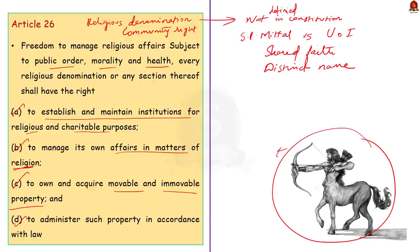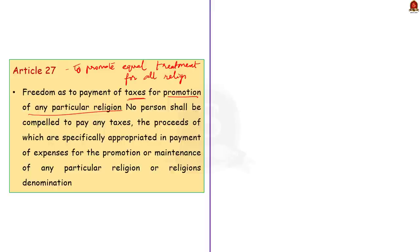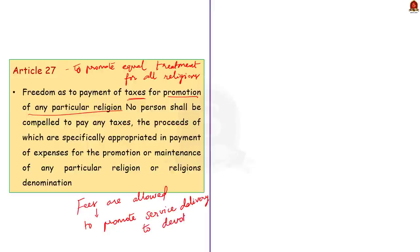Moving on to Article 27, no one can be compelled to pay any taxes for the promotion or preservation of any religious denomination. This provision is inserted to prevent the government from favouring one religion over another. Notice that the wording says 'taxes' — so charges can be imposed. For example, the government imposes entry fees on religious sites, and this is not violative of Article 27, as charges like entry fees are used mainly for the secular management of the religious site and not for the promotion of that particular religion.